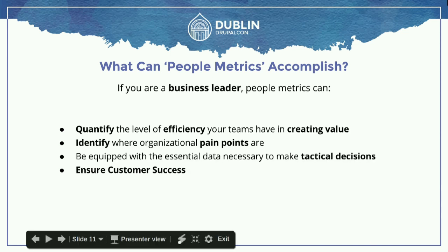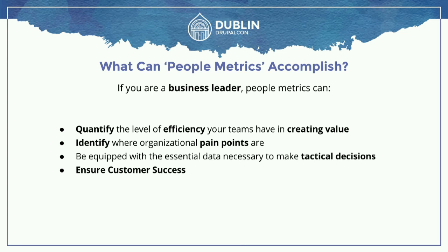If you're a business leader, people metrics can quantify the level of efficiency your teams have in creating value. How efficient are they? How much time are they spending towards what they're hired for? They allow you to identify organizational pain points so you can see which teams are struggling and need assistance. They allow you to be equipped with essential data to make tactical decisions — do you need to create a new team, do you need to move resources to another project? And finally, ensure customer success, because without a successful customer, you're not going to be around.